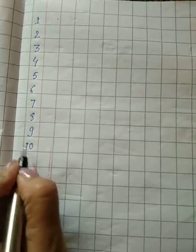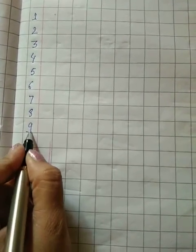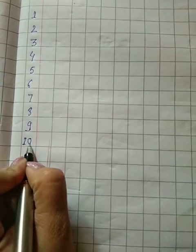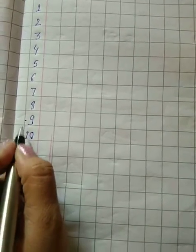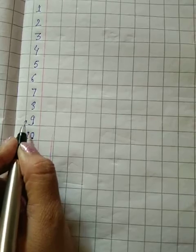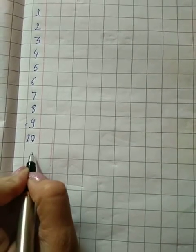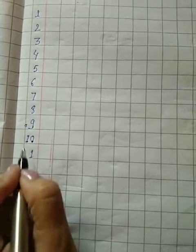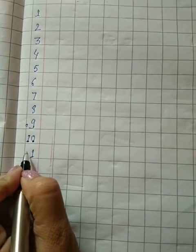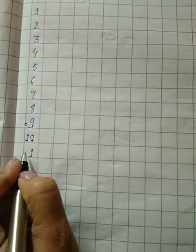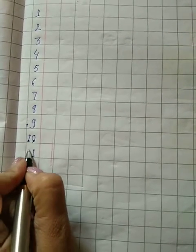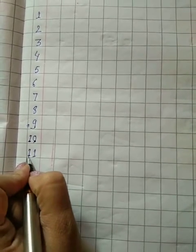Now, after 1, 0, 10, like this, 9 ke baad 0 aata hai. So here we will say that 0 is 0, then 0 ke baad 1 aata hai. Then 0 ke baad, what will happen? 1 aata hai. And then 1 ke baad, what will happen? 2? Oh no. 10 ke baad, 11.